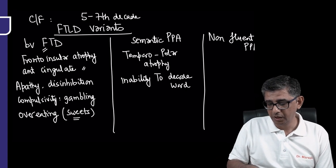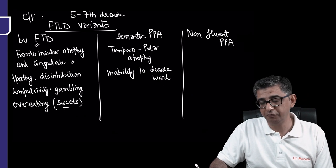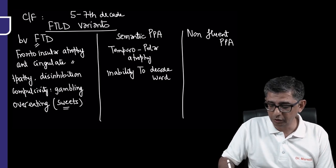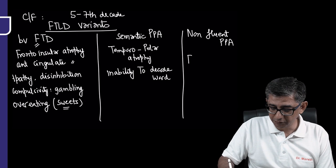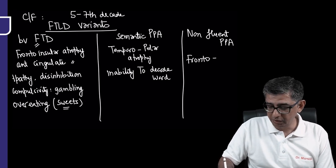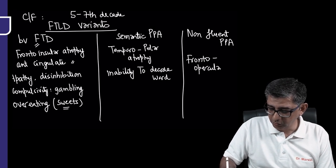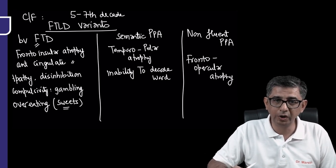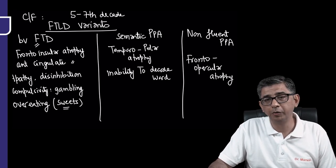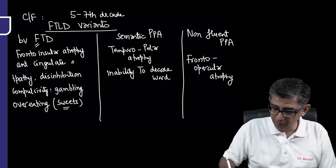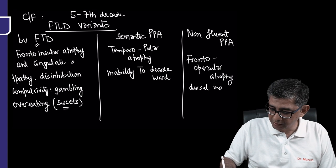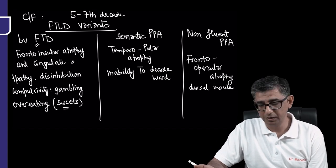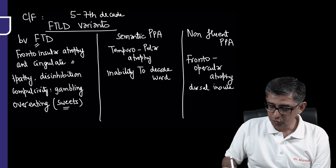In contrast, non-fluent primary progressive aphasia - when I'm saying non-fluent, the first thing that comes to mind is Broca's area getting involved, which is very close to the frontal lobe. If he asks what area of the brain is involved, it's again the frontal lobe, but instead of answering fronto-insular, here you will answer fronto-opercular atrophy. This is an important exam point - the dorsal part of the insula is also involved, but your first answer for non-fluent PPA is fronto-opercular atrophy.